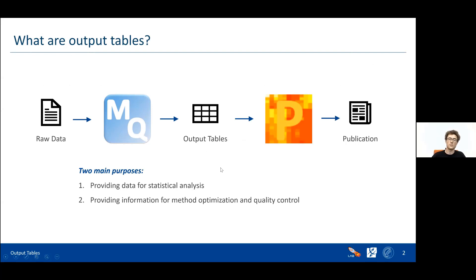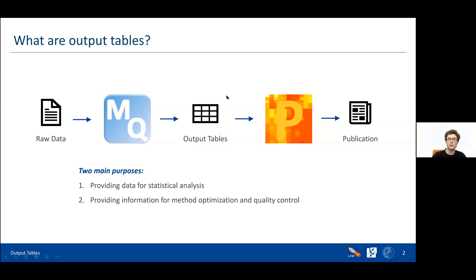What actually are output tables? The workflow for our two software suites starts with making experiments, which produces raw data — the output of your master function. MaxQuant takes care of all this data and generates meaning from it, as covered in the pre-course and yesterday. MaxQuant then gives you output tables, which are easy to read because they come in tab-separated format, and they include all the interesting information for you to actually do science — statistical analysis and so on.